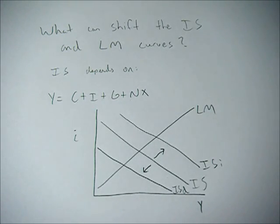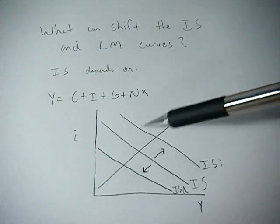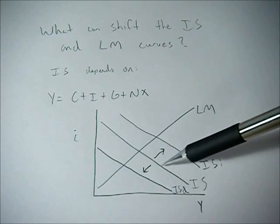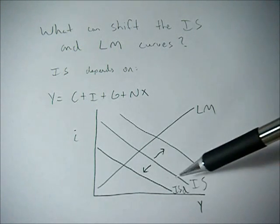And that can do with positive or negative expectations about the future. So positive expectations about the future will increase IS, negative expectations will decrease it.